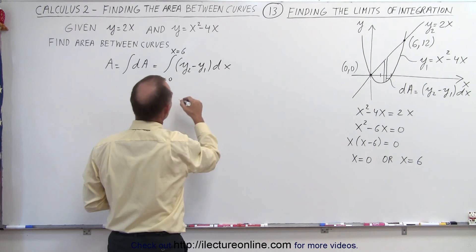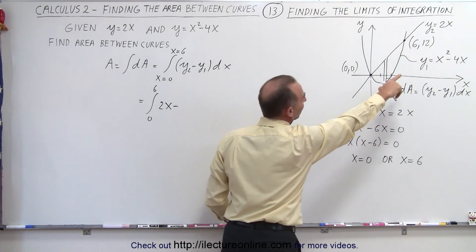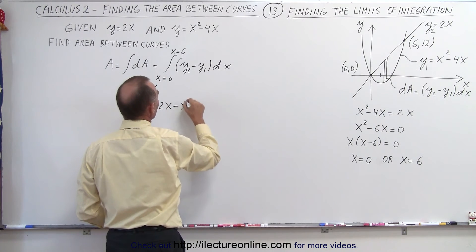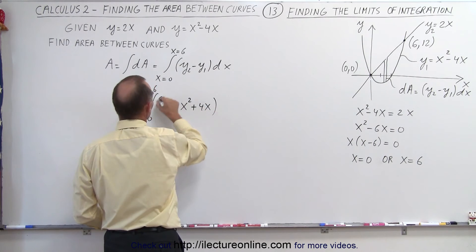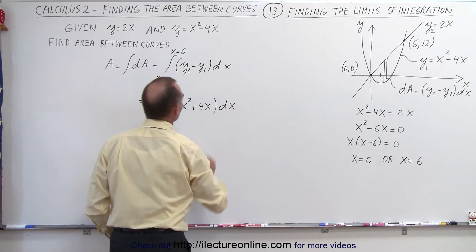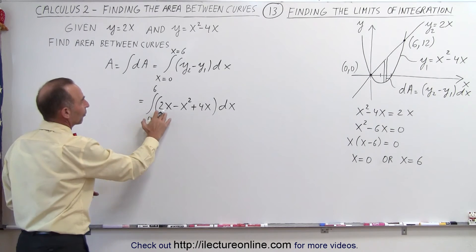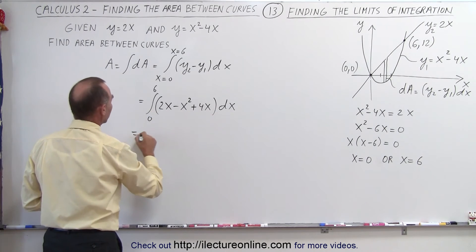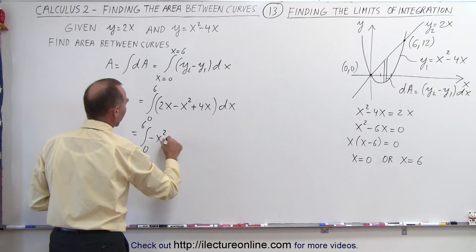y2 will be 2x, subtract from that y1, and y1 is x squared minus 4x, that will be minus x squared, and minus times the minus is plus 4x times dx. And that will give us our integral. Now we can add these two together, so this will be the integral from 0 to 6 of minus x squared plus 6x dx.